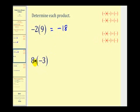Here we have a positive times a negative. Again, the signs are different, so the product will be negative. Or, a positive times a negative is equal to a negative. So we have negative twenty-four.